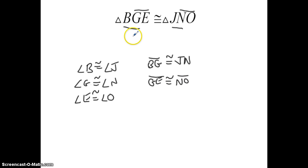And finally, you could say that B and E go together and J and O go together. So you could say that BE is congruent to JO. So hopefully you can see from this explanation that there's a lot to be learned, a lot of information that you can glean from a congruent statement.